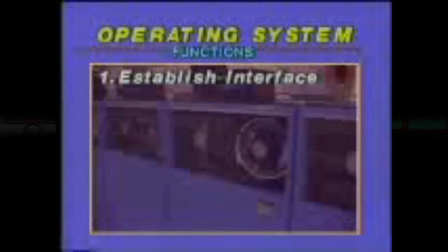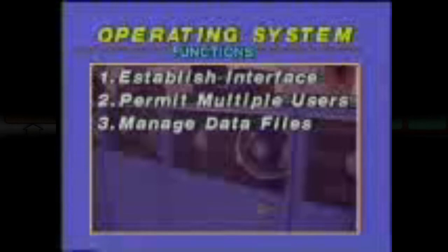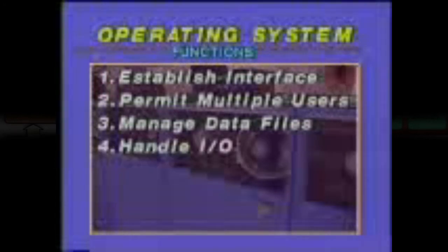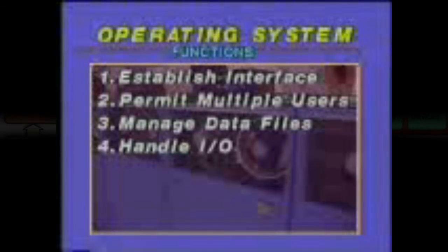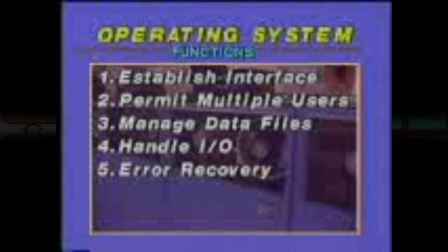One function of all operating systems is to establish the way users interface with the computer — for example, how data are stored on files and how programs are initiated. A second function is to permit multiple users to share the same hardware. A third function is to manage data files so that data may be shared among several users or applications. Potential users can be scheduled and unauthorized access prevented. A fourth important function is the handling of all input and output data, providing common control over how data is stored, accessed, and retrieved. A fifth function is to provide error recovery — if an error occurs reading data, the system will try to reread the data several times until the error is recovered or bypass procedures initiated.